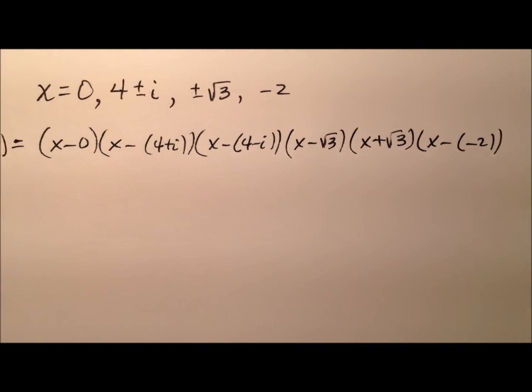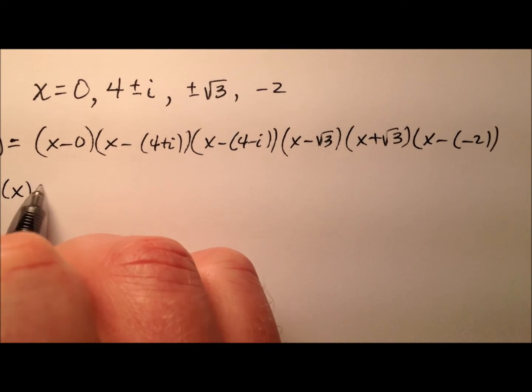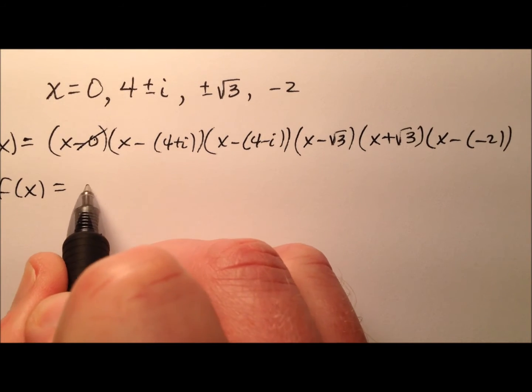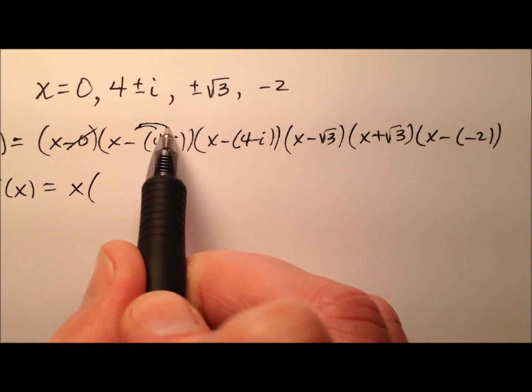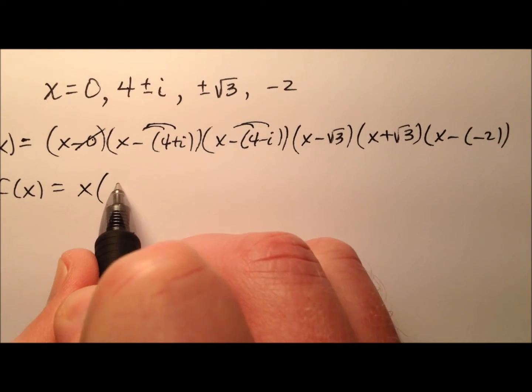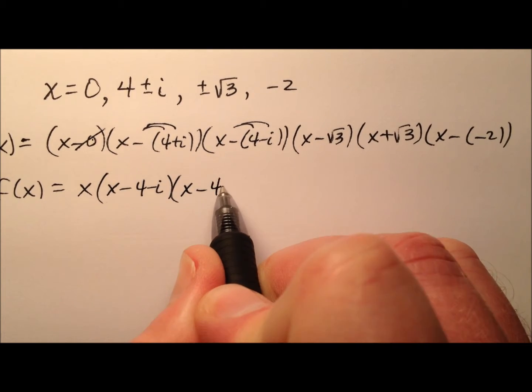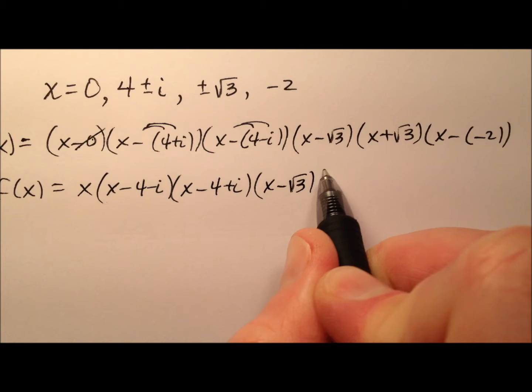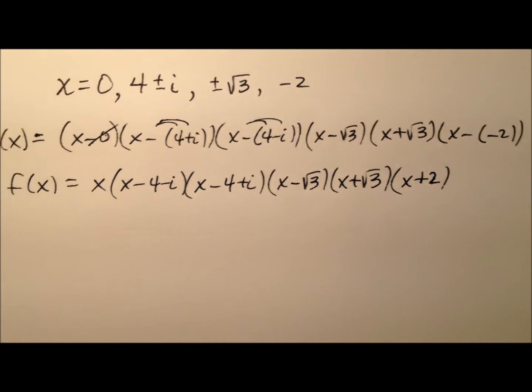So this is stretched out pretty long here. Let's go ahead and do some simplification. My f of x equals, let's see, the x minus 0, I don't really need to put that 0 there, so let's just go ahead and say x. And then on these I can distribute the negative through here and I have x minus 4 minus i, x minus 4 plus i and then x minus the square root of 3, x plus the square root of 3, and x plus 2.